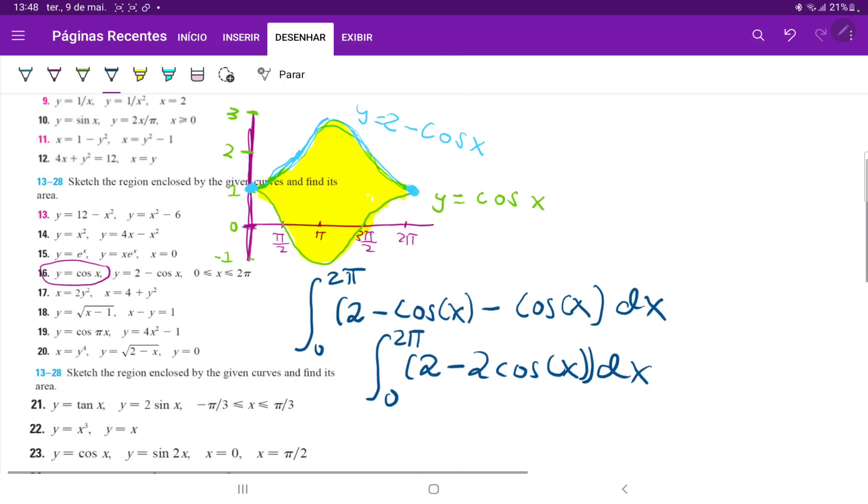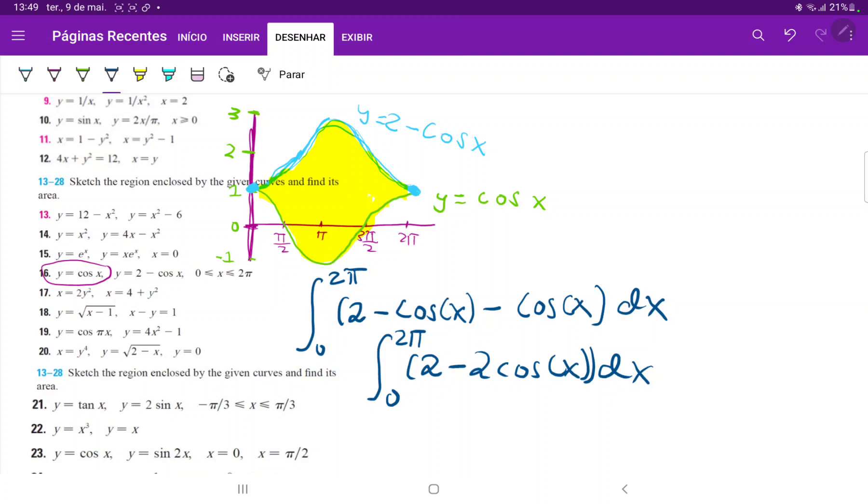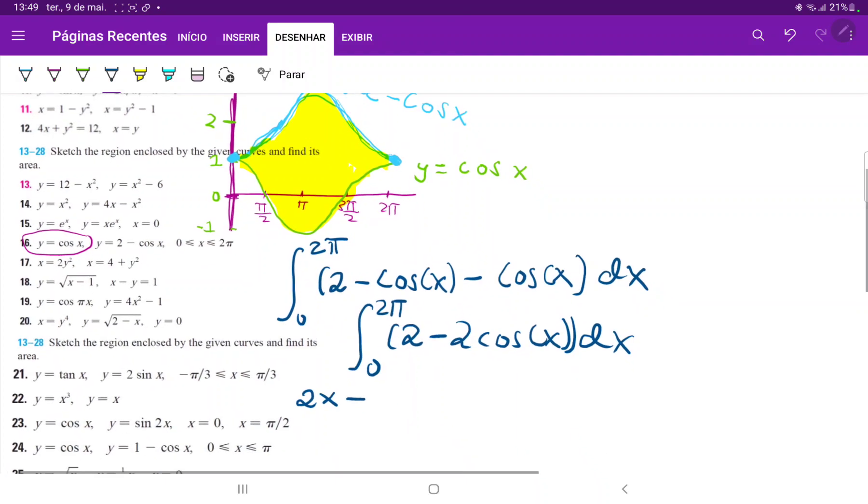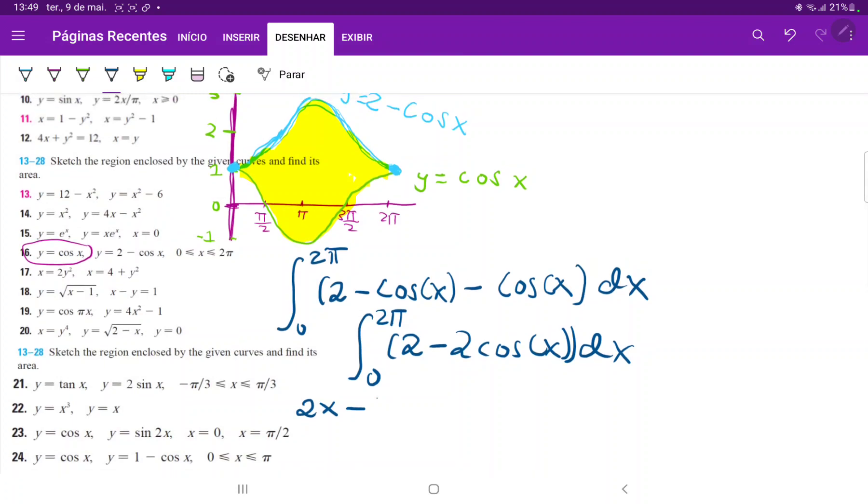So, once we have this, we can go ahead and apply our reverse power rule and our trig integrals. So, this becomes 2x minus the integral of minus 2 times the integral of cosine of x, which is just sine of x.